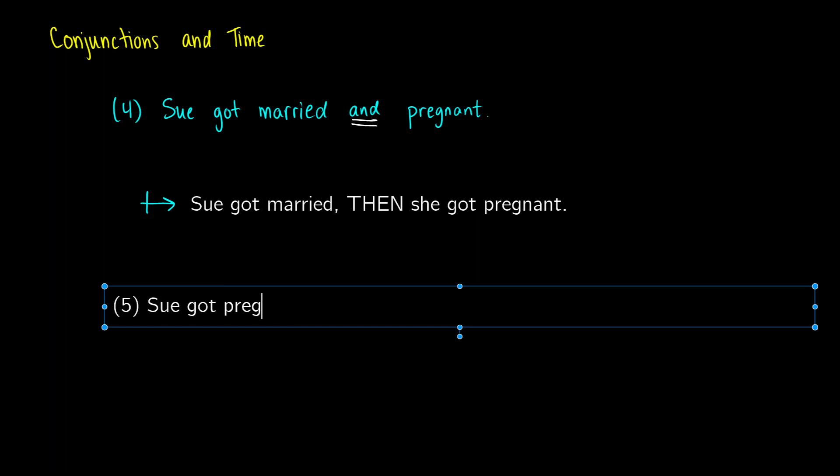So the expectation here is if you say she got pregnant and married, people would be assuming just based on expectations of how we talk and communicate with each other that Sue got pregnant,